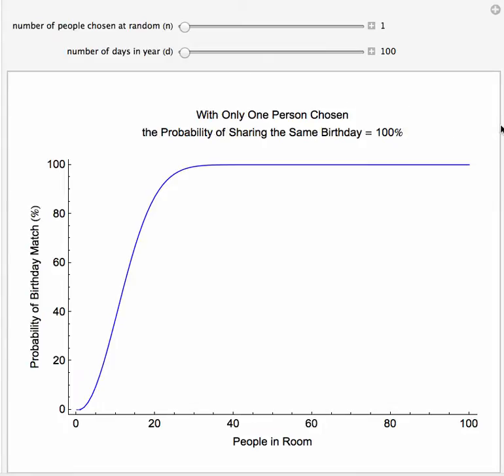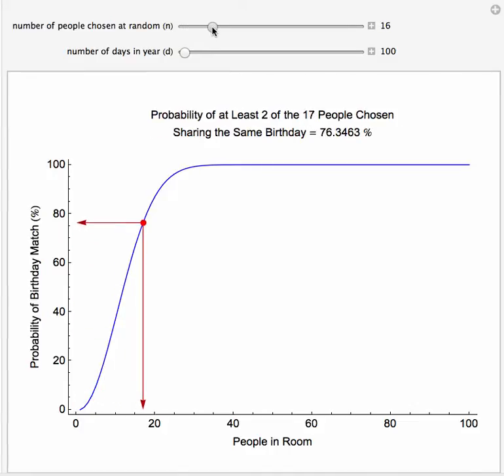Shown here is a graph of the probability of a birthday match versus the number of people in the room. We can vary the number of people in the room to get a visualization for the probability of two people sharing the same birthday. We can see the probability converges to 100% fairly quickly.